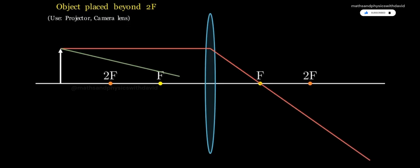Next, draw another ray from the top of the object through the center of the lens. This ray continues undeviated. Where the two rays meet is the image position. Here, the image is formed between F and 2F. It is real, inverted, and smaller than the object.